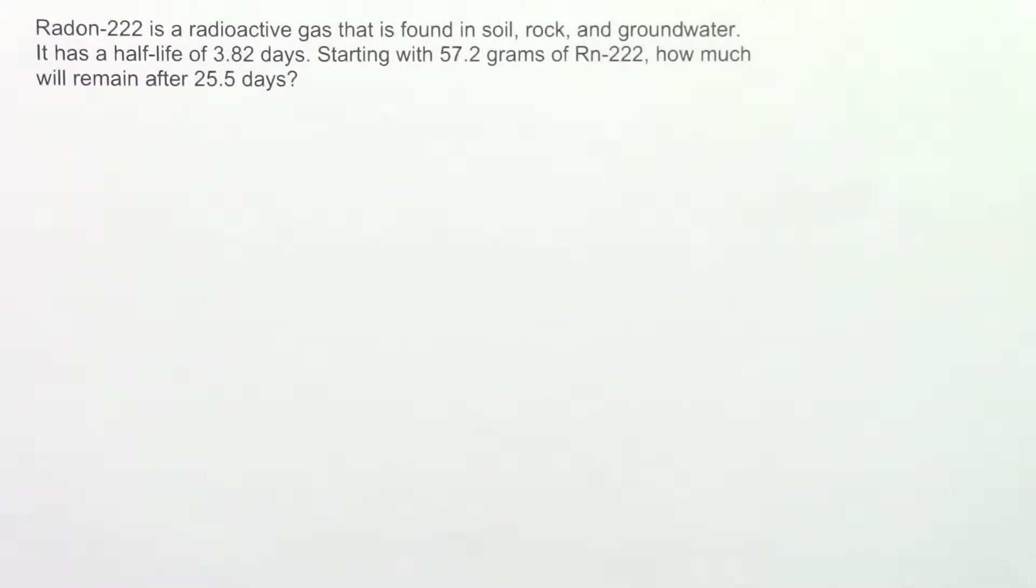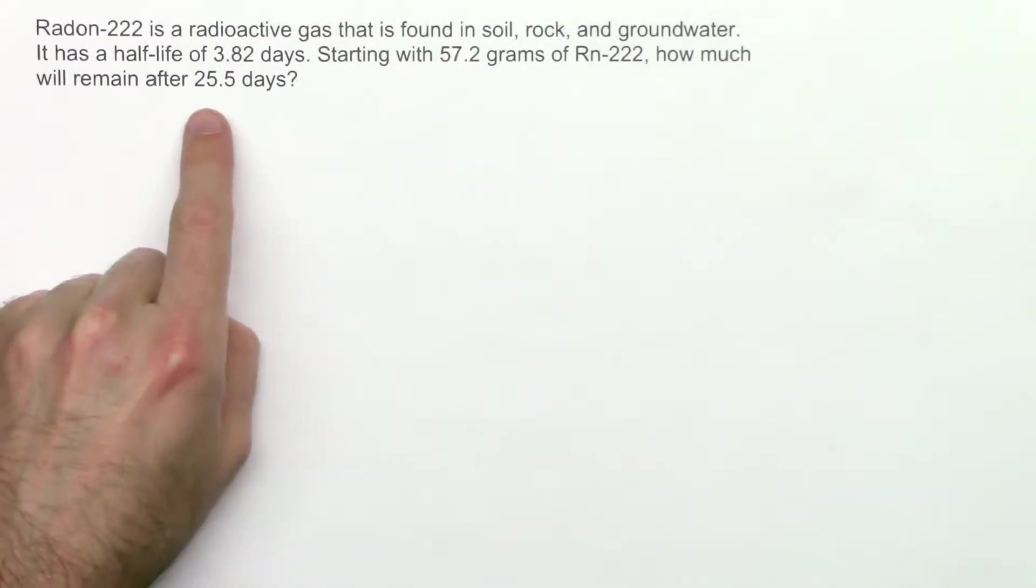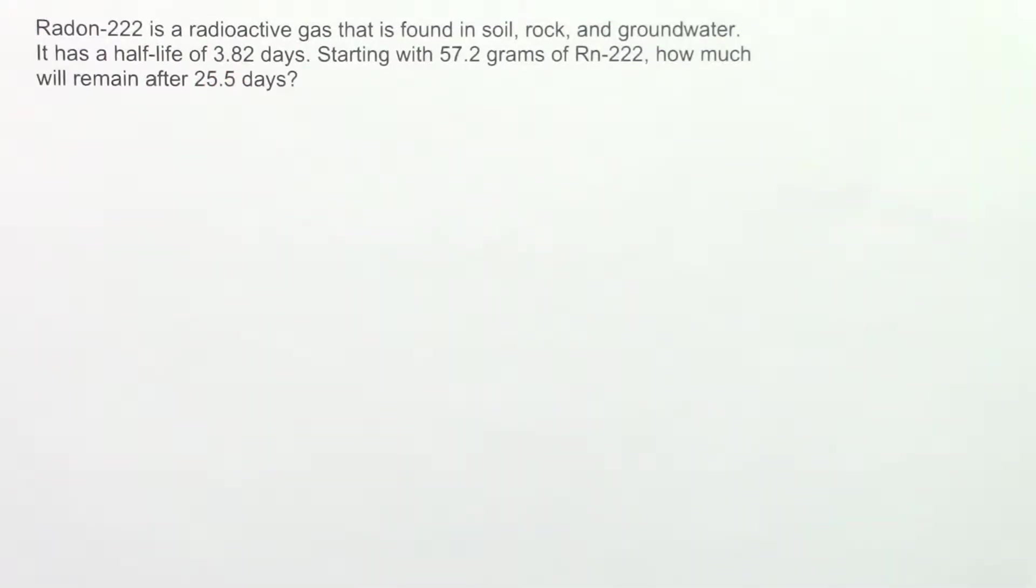But here, we're given messier numbers. 25.5 days, 3.82 days, they don't easily divide into each other. So that means that instead of basic arithmetic, we'll have to use a set of two mathematical equations.